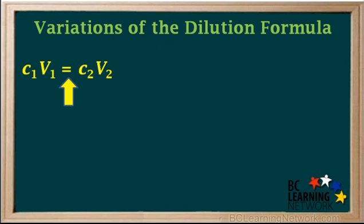Different teachers and different textbooks use different variations of the dilution formula. The one we'll use here is C1V1 equals C2V2. Another common one is M1V1 equals M2V2, where M is the molarity, or molar concentration.